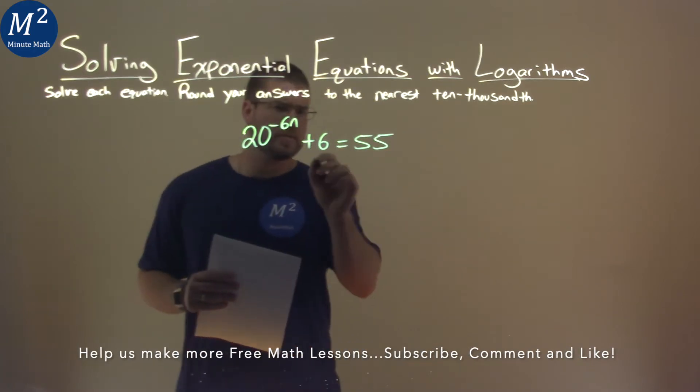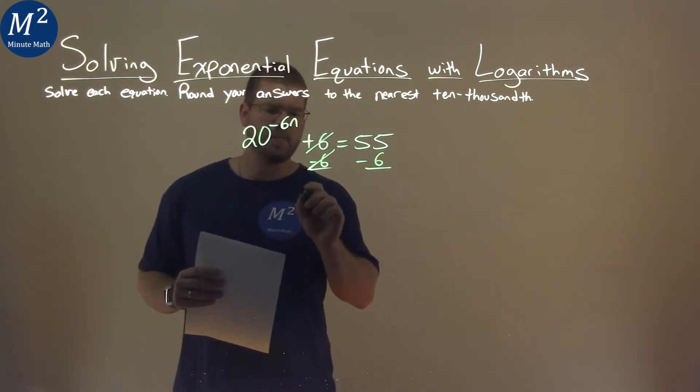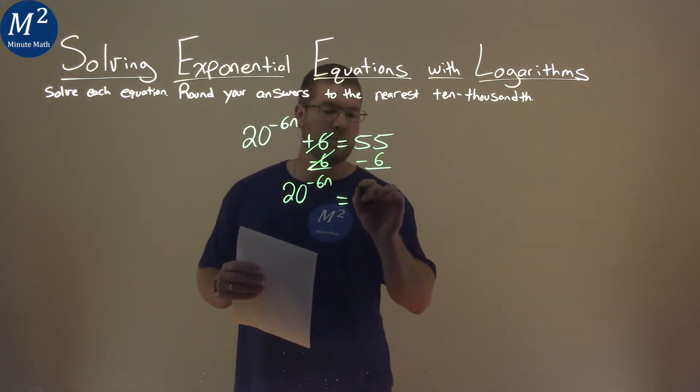First thing I want to do is subtract 6 from both sides of the equation here. That cancels this 6 out, and we're left with 20 to the negative 6n power on the left. That's equal to 55 minus 6, which is 49.